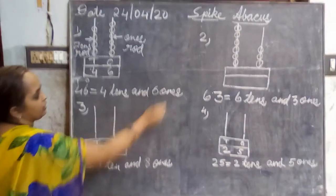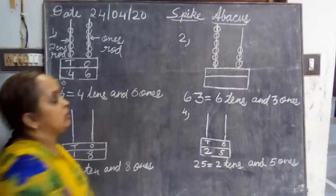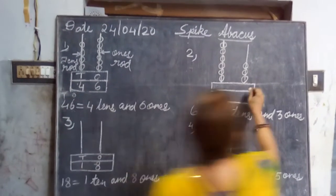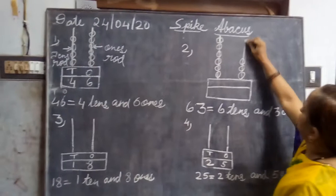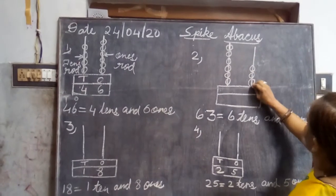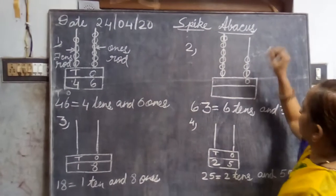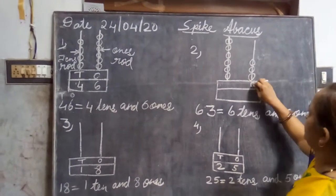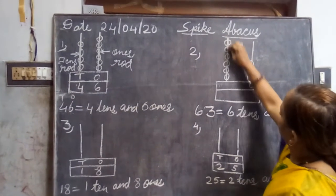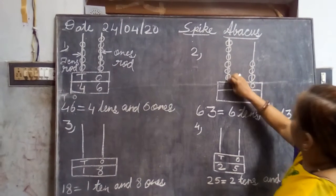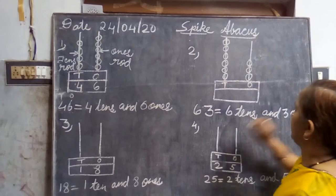Let us take one more example of the same. See here. This rod, the first one, this rod is called ones rod. So we are going to write here ones, and here this rod is called tens rod. So we are going to write here T for tens.